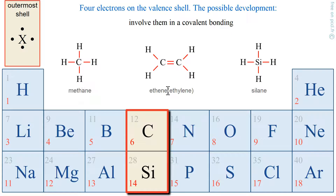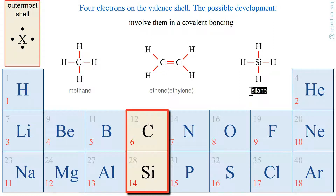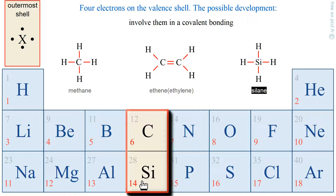Why not make double bonds? Here for ethene and ethylene — if you count, you have 8 electrons around the carbon, so the octet rule is verified. Therefore silane exists, since carbon and silicon are on the same column and are going to form the same sort of molecules.